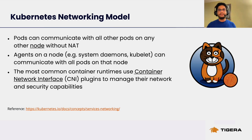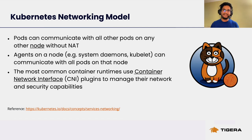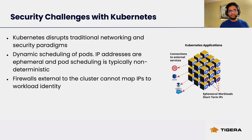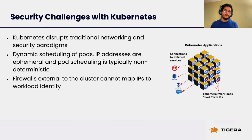At a high level, the Kubernetes networking model provides a flat network where pods in the cluster can freely talk to each other. There are benefits to this model — it alleviates complexities that could arise from the underlying network. However, the model also introduces certain security challenges. Kubernetes disrupts traditional networking and security paradigms. In traditional networks, when security is enforced, it's done so at certain choke points in the network.